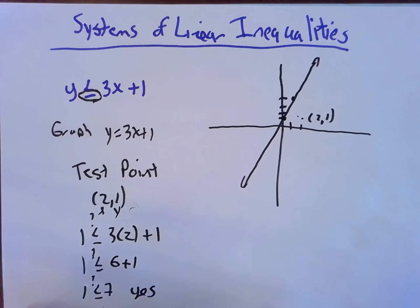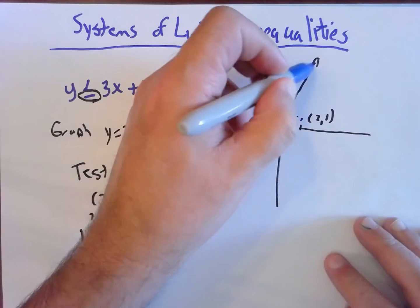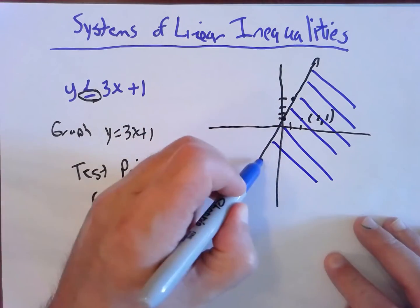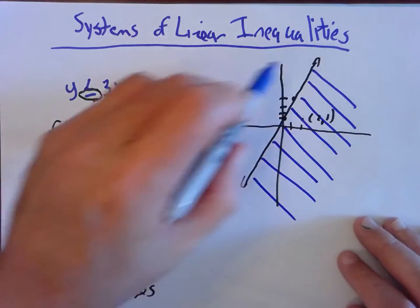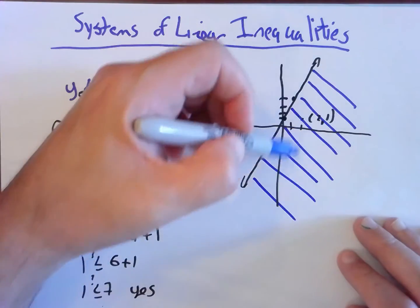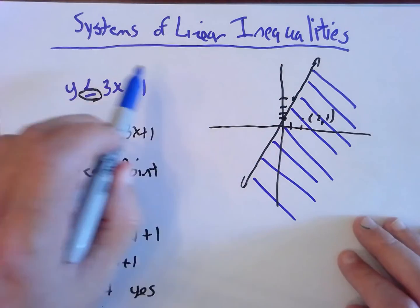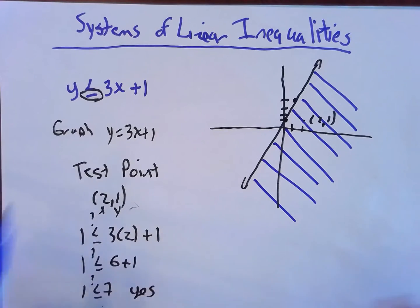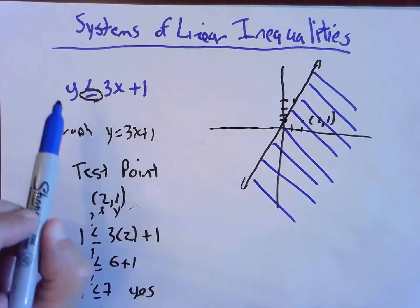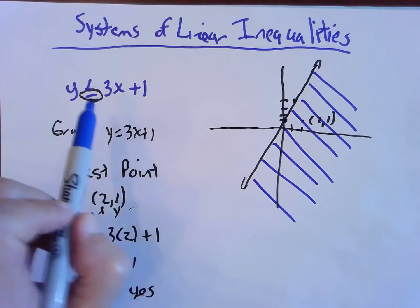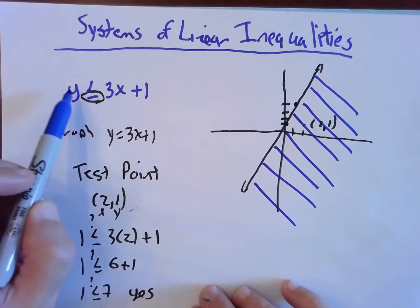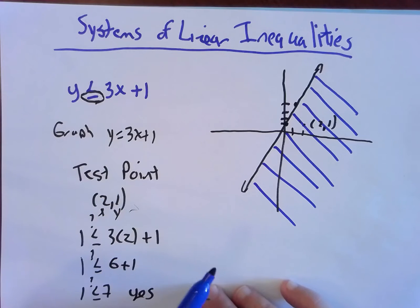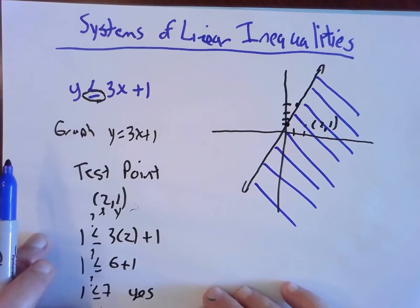So we shade the half that contains the test point — everything underneath the line. That's the solution; all points in this shaded region satisfy the inequality. A shortcut: if the line is in slope-intercept form and y is by itself, when it's less than, shade below; greater than, shade above.